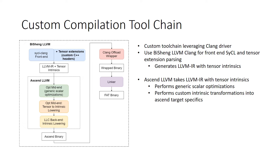This is then passed into the custom and also proprietary ASCEND LLVM compiler, where we do a selection of optimizations, starting off with generic scalar optimizations, and then followed by custom intrinsic transformations into ASCEND target specifics. That is then passed into the back-end, where it gets converted into a binary.